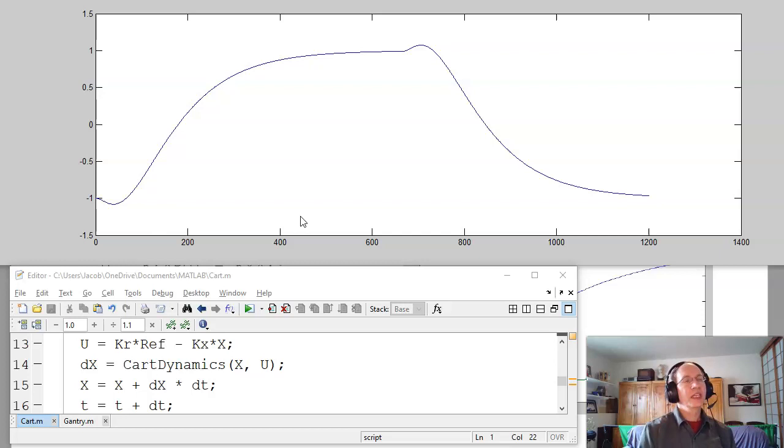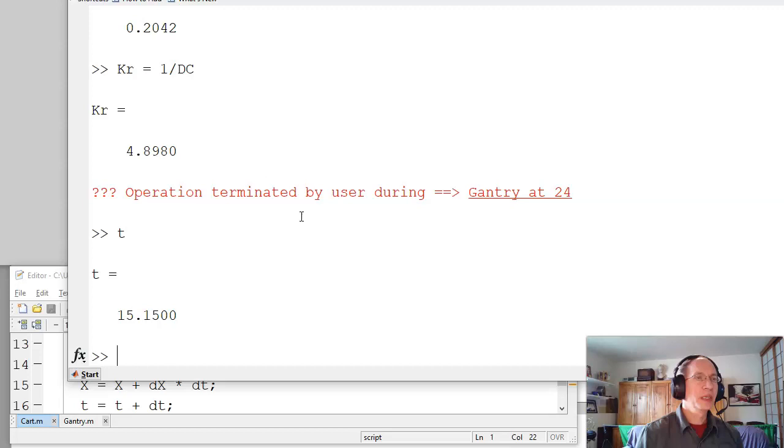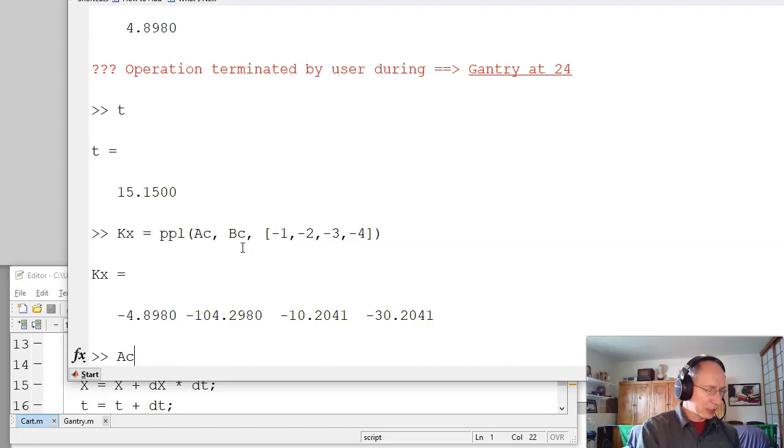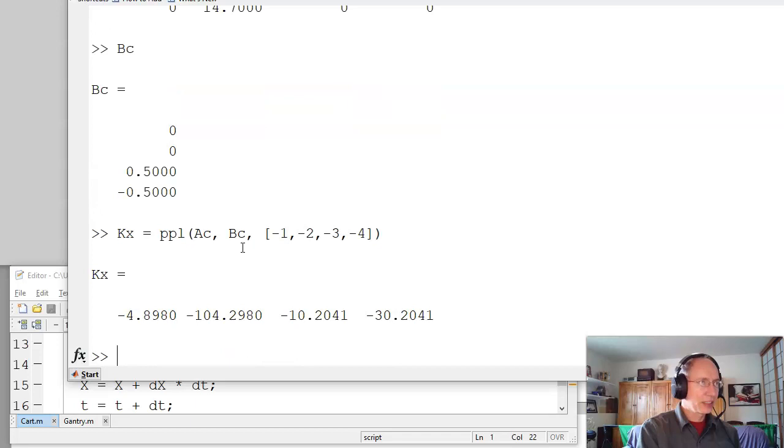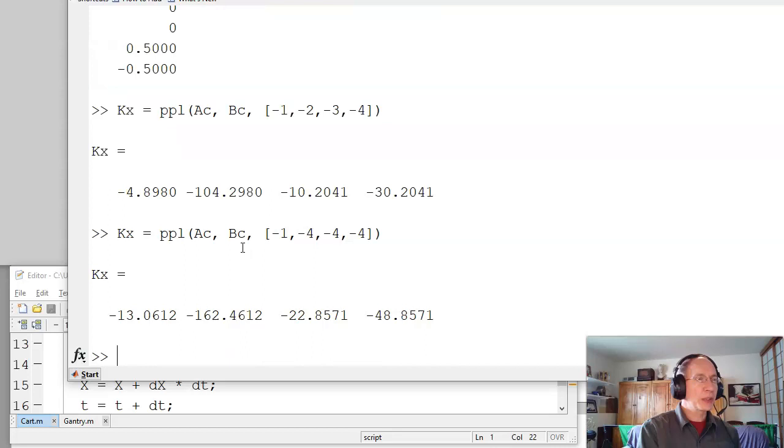Now, notice I put the poles at minus 1, 2, 3, and 4. The dominant pole at minus 1 makes sense. So this is my A matrix for the cart, B matrix for the cart. So there's AC, BC. Put the poles at minus 1, 2, 3, 4. I get that. The pole at minus 1 kind of makes sense. That's my dominant pole. The other three poles, I really don't know where to put them. Pretty much anywhere works, at least on paper. What I want is to keep the gain small, but keep these poles fast relative to your dominant pole. So arbitrary let's put the poles at minus 1, 4, 4, and 4. Yeah, sure, why not?